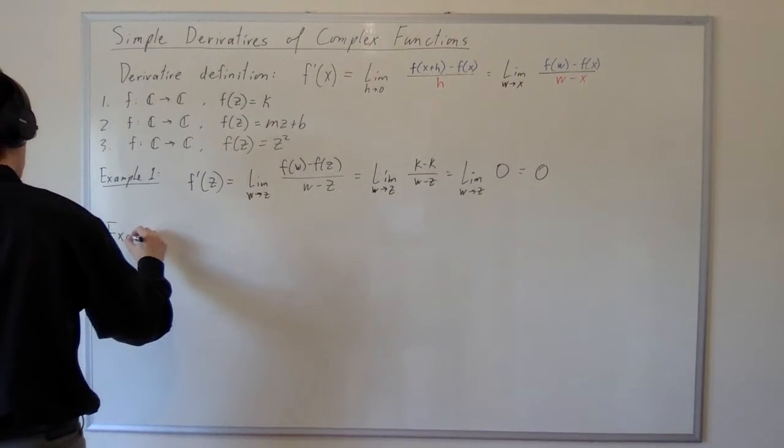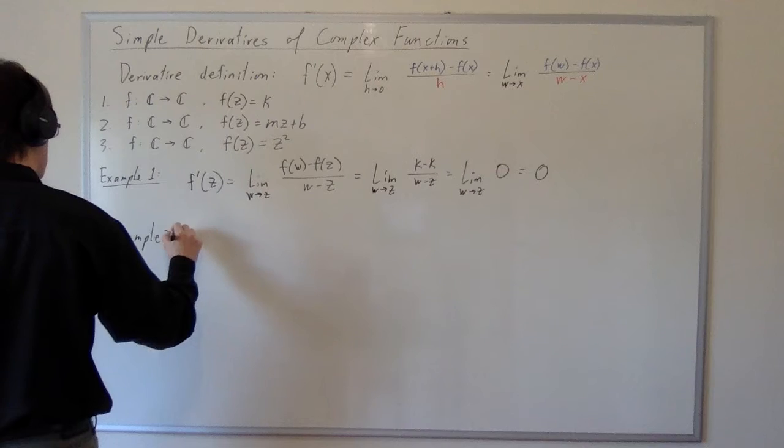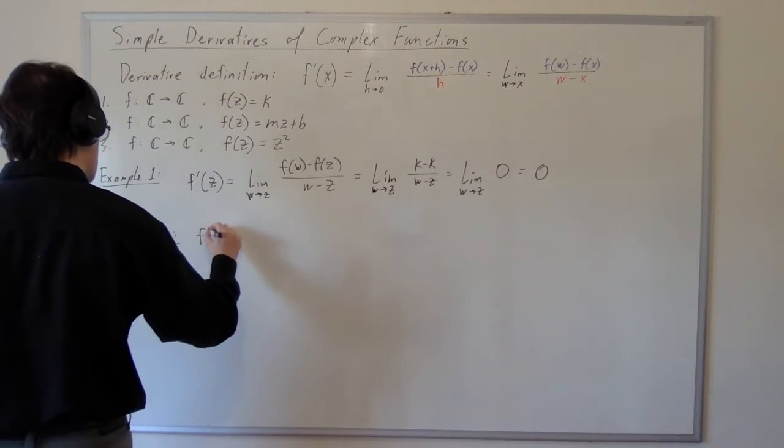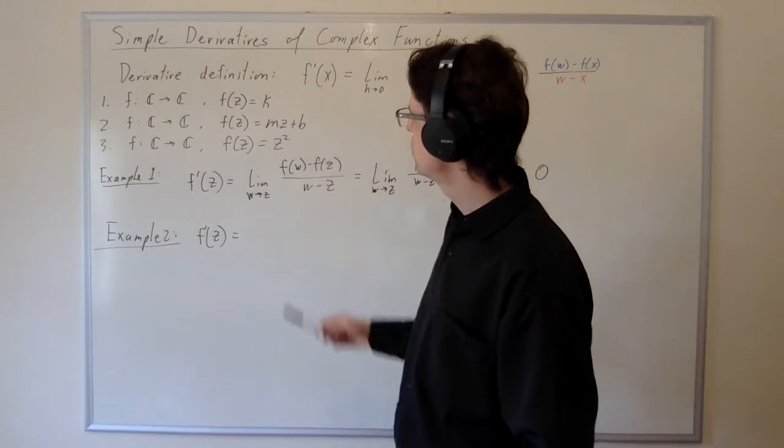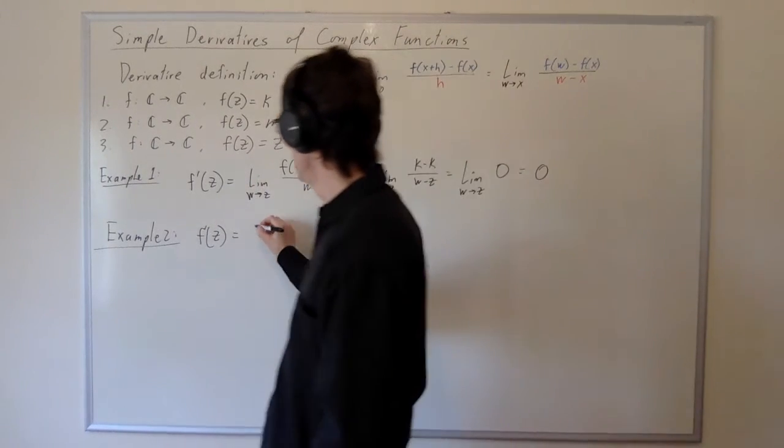Things aren't much harder in the case of a linear function, but we need to verify that our definition is correct. So let's calculate the derivative of this linear function in example two. The function's formula is mz plus b.